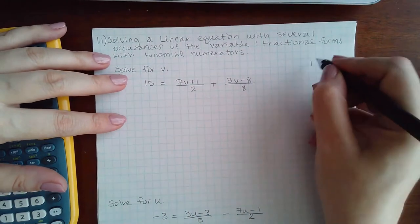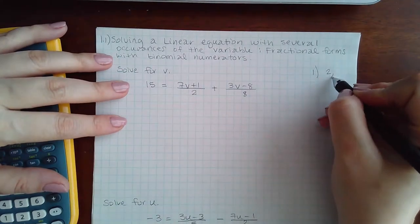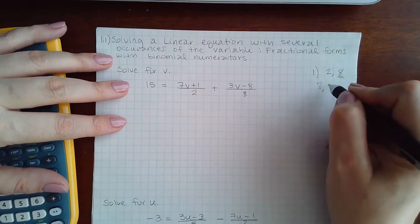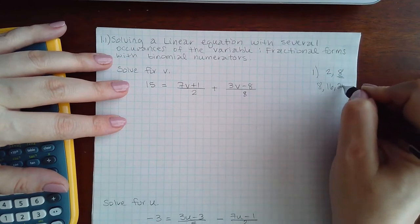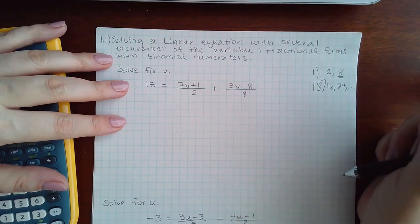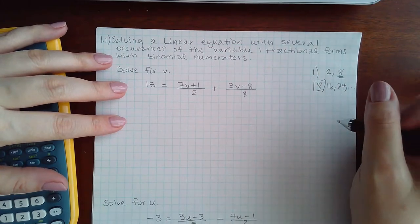So first step is to get rid of the fractions. I have 2 and 8 as my denominators. So let's list the multiples of the larger number. And 2 does go into 8 itself. So 8 is going to be my smallest common denominator.